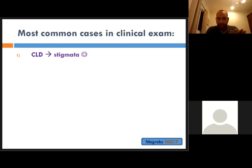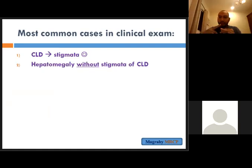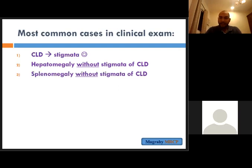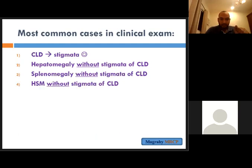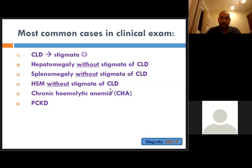We have chronic liver disease and liver cirrhosis with stigmata of chronic liver disease. For the kidney: renal failure alone, renal transplantation, or renal replacement therapy — either renal dialysis or transplantation. Apart from chronic liver disease with stigmata, you may have hepatomegaly alone, splenomegaly alone, or hepatosplenomegaly without stigmata. One of the commonest causes of hepatosplenomegaly without stigmata is chronic hemolytic anemia. Renal cases include polycystic kidney or renal failure with renal dialysis.